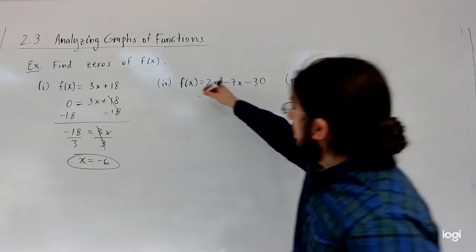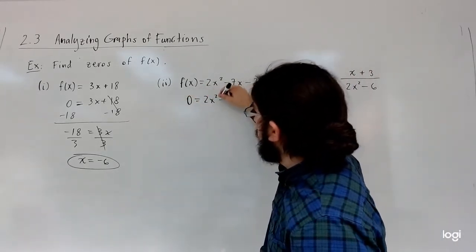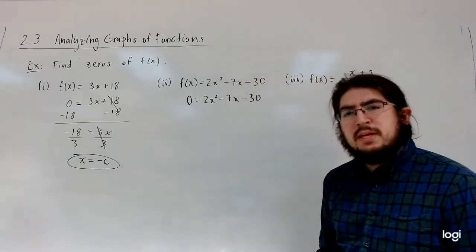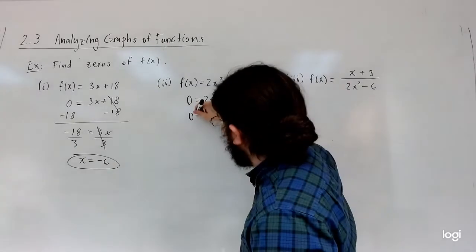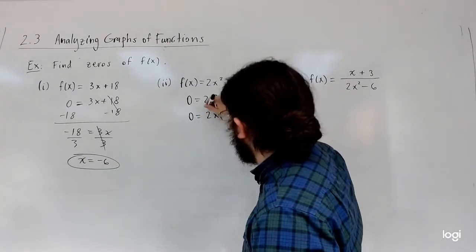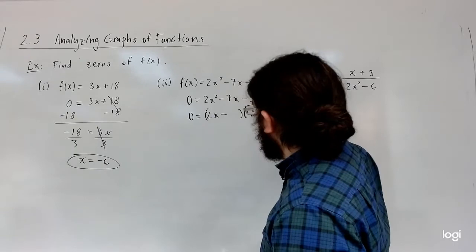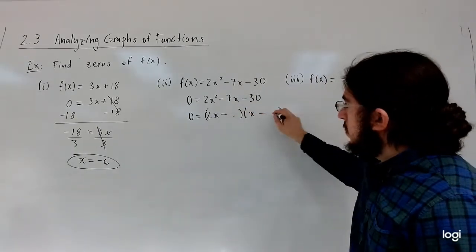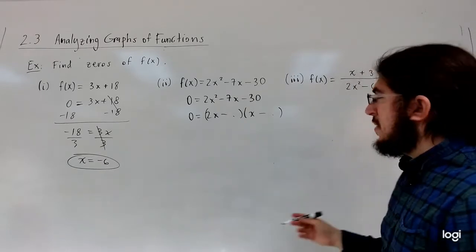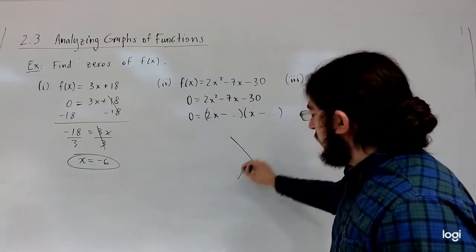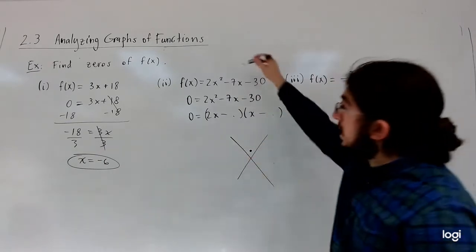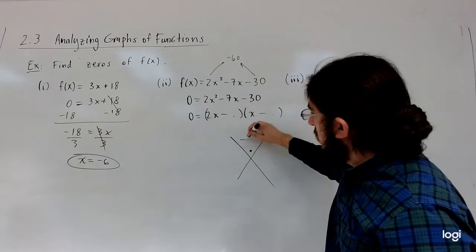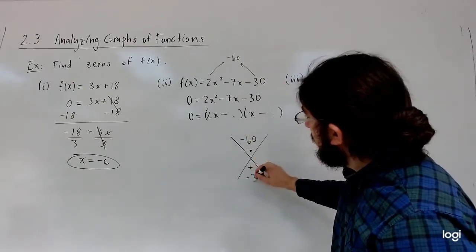The next one is going to be a little more challenging because we have to either factor and use the zero factor property, or use the quadratic formula. I'm going to attempt to factor this using the AC method. We look for two numbers that multiply to the product of A and C — which is negative 60 — and add to negative seven, the middle number.